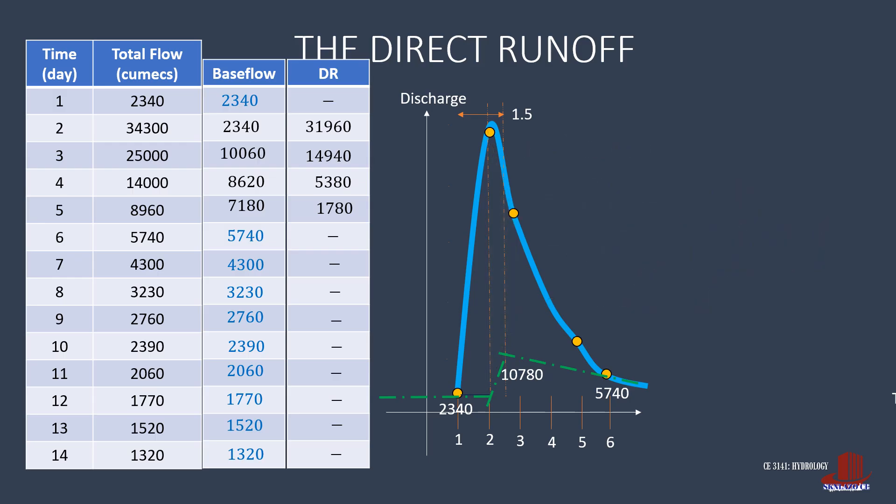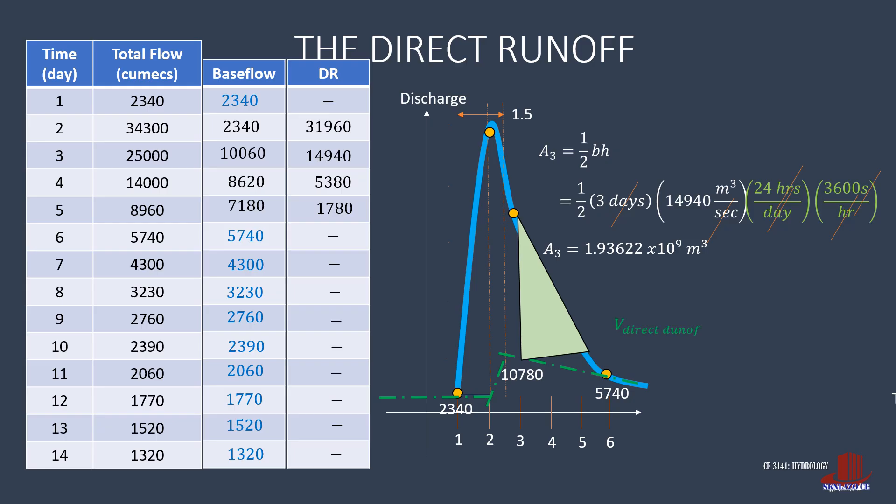To complete the volume of direct runoff, take the last area in the hydrograph from day 3 to day 6. The area is somehow a triangle, with area of half of base times height, or half of 3 days times 14,940 cumecs. Attach the conversion factors where the third area is then computed as 1.93622 megacubic meters. The total volume of direct runoff is then the summation of these three areas, which turns out as 5.343 megacubic meters.